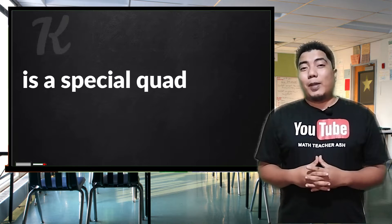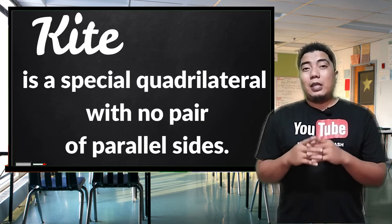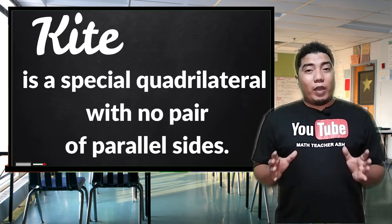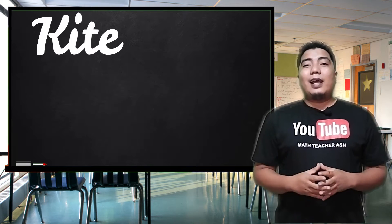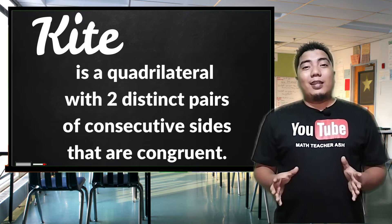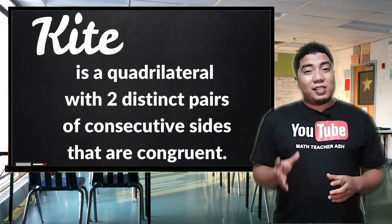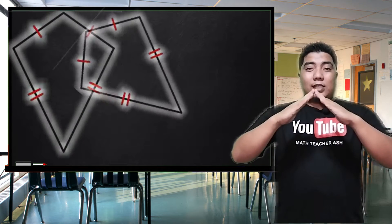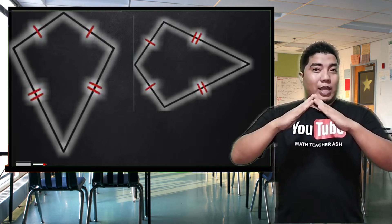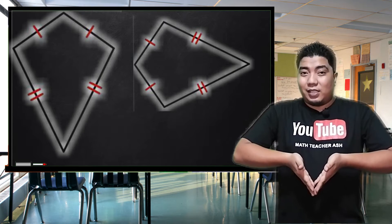A kite is a special quadrilateral in which it does not have any parallel sides. However, a kite is defined as a quadrilateral with two distinct pairs of consecutive sides that are congruent. Meaning, these two consecutive sides are congruent, and these two consecutive sides are also congruent.